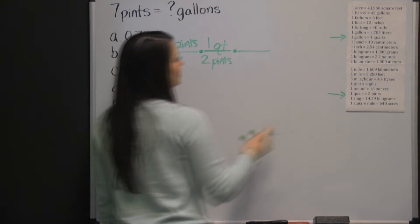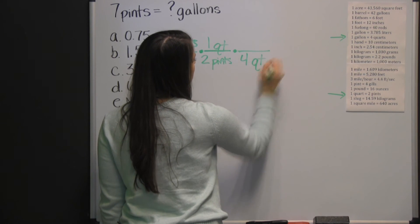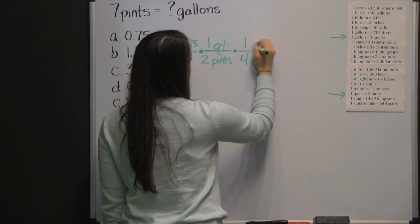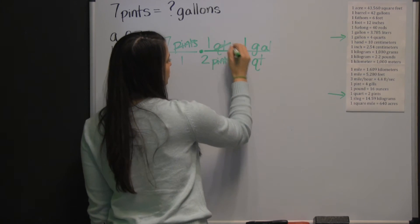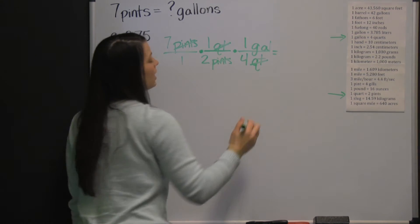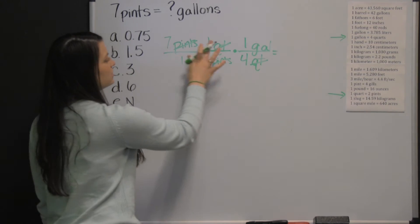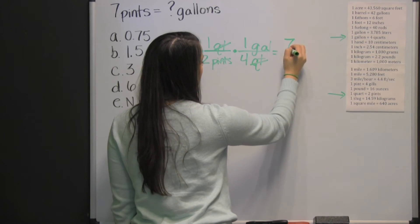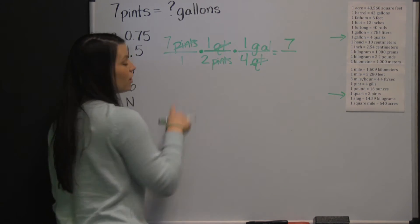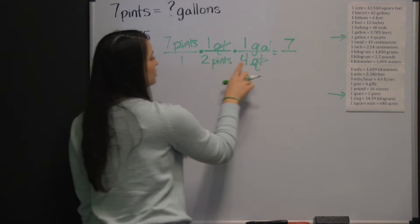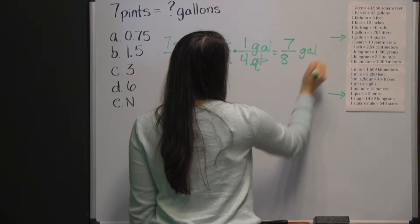Then we multiply times our next conversion factor for converting our quarts into gallons. Again, we want to put our units diagonally, so we'll put our four quarts in the denominator and one gallon in the numerator. Our quarts cross-cancel, and now we can simply multiply straight across. Seven times one times one is seven in the numerator, and our denominator is one times two times four, or eight. So it's seven-eighths of a gallon.